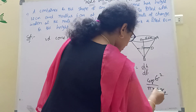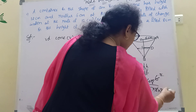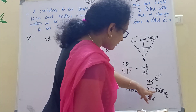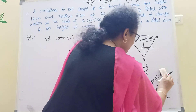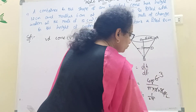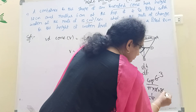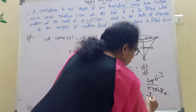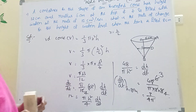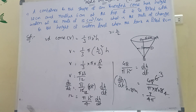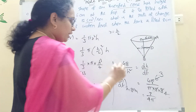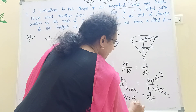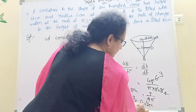8 squared is 64. So 12 equals pi times 64 by 4 times dh by dt, which gives 12 equals 16 pi times dh by dt. Therefore dh by dt equals 12 by 16 pi equals 3 by 4 pi centimeters per second. The answer is dh by dt equals 3 by 4 pi centimeters per second. Note: the volume rate is in cubic centimeters, so the height rate is in centimeters per second.